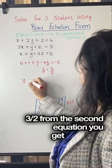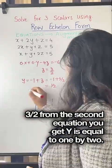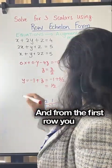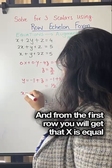The second equation you get, y is equal to one by two, and from the first row, you will get that x is equal to three by two.